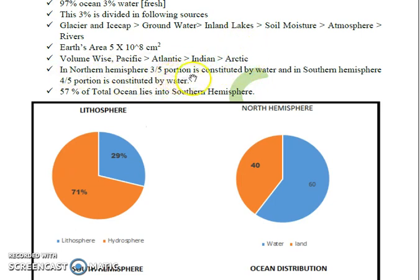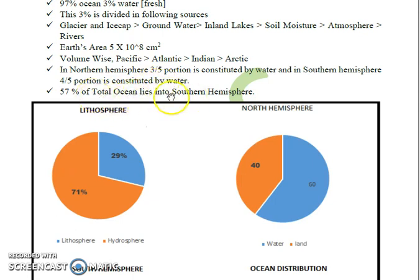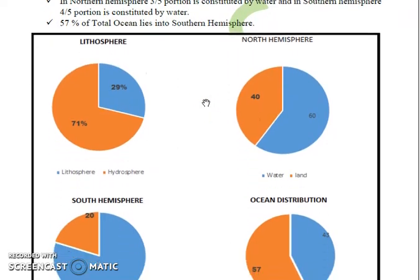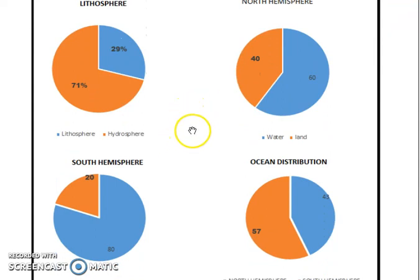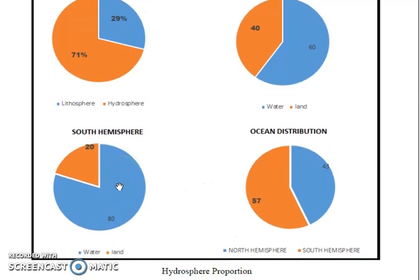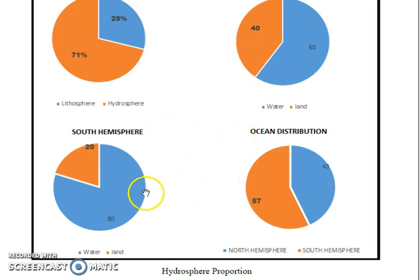While in the Southern Hemisphere, 80% of the portion is constituted by water. 57% of the total oceanic water lies in the Southern Hemisphere. In the Southern Hemisphere, 80% is water and 20% is land. Overall, 43% of the oceanic water lies in the Northern Hemisphere and 57% lies in the Southern Hemisphere.